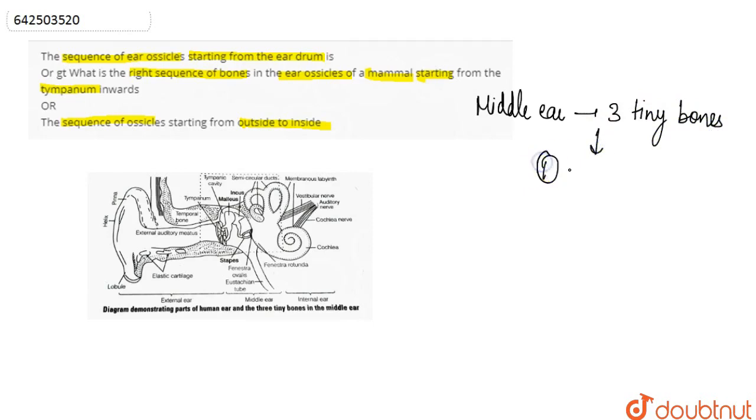And these are basically named as the malus, incus, and third one is the stapes. So these three are collectively called as the ear ossicles.